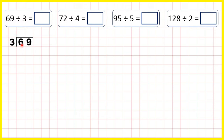Now we take the first digit, which is a 6. So 6 is in the 3 times table, so we can write 6 below the 6, and then because 6 is 2 times 3, we can write 2 in our answer line — so this bit up here is our answer line.